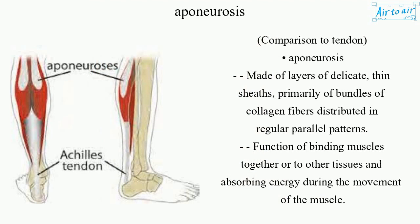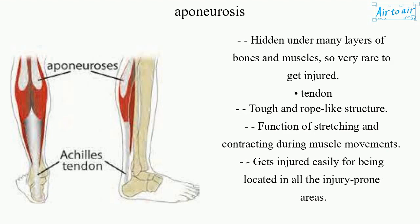Comparison to tendon: Aponeurosis is made of layers of delicate, thin sheaths, primarily of bundles of collagen fibers distributed in regular parallel patterns. Its function is binding muscles together or to other tissues and absorbing energy during movement. It is hidden under many layers of bones and muscles, so it is very rare to get injured.